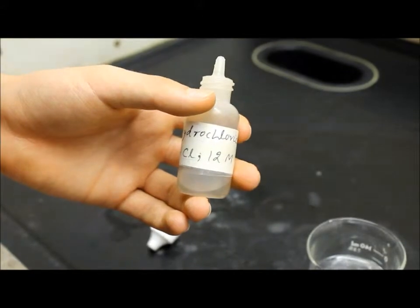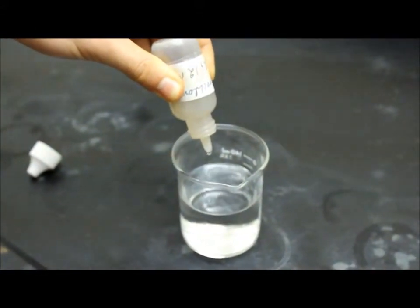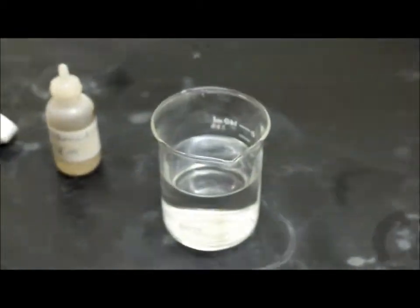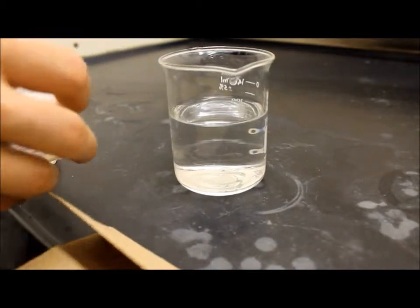Now, move to the fume hood and carefully add 10 drops of 12 molar HCl. Be careful because the acid is highly concentrated. Finally, add a scoop of soluble starch and stir it to complete solution B.